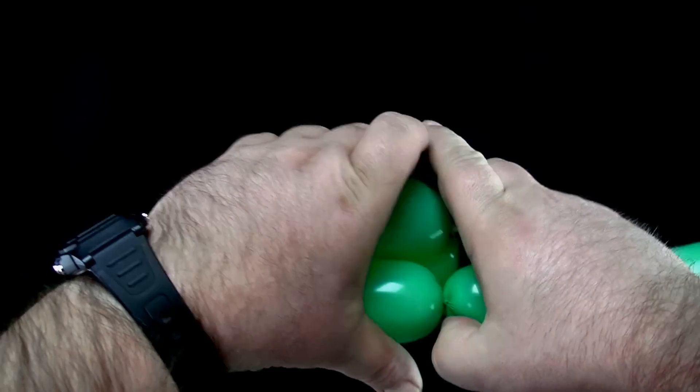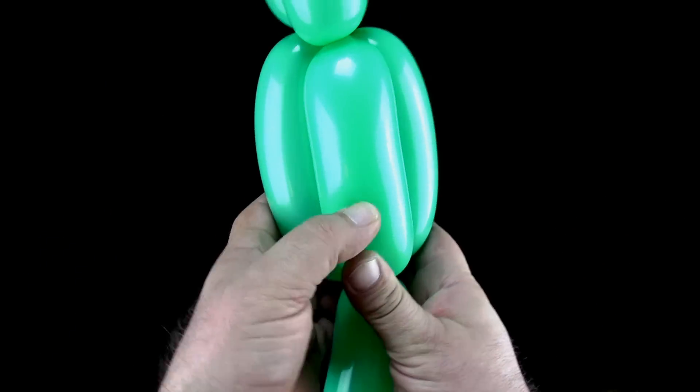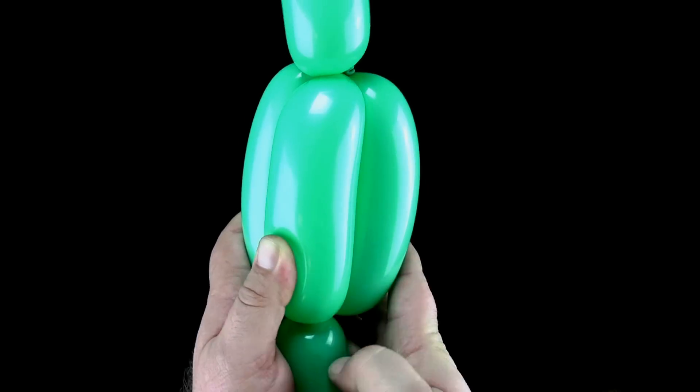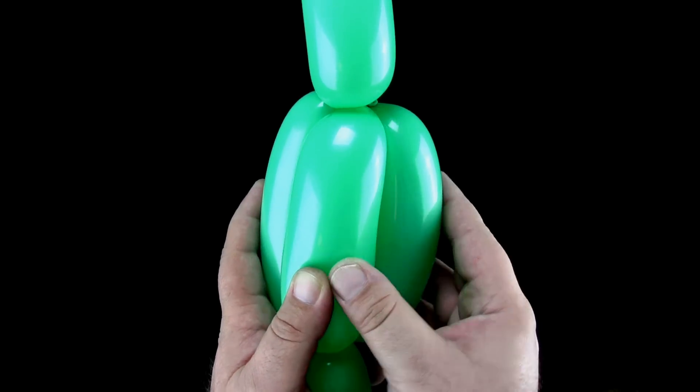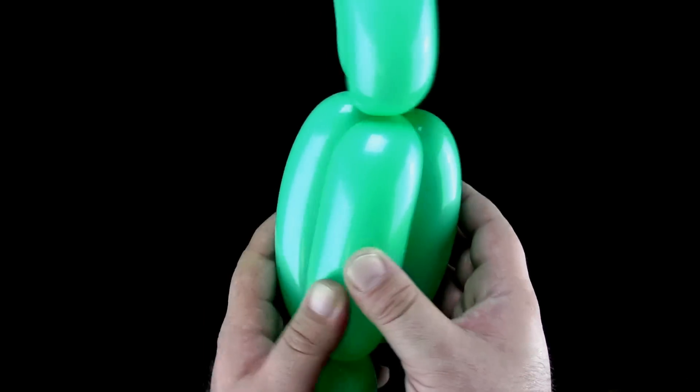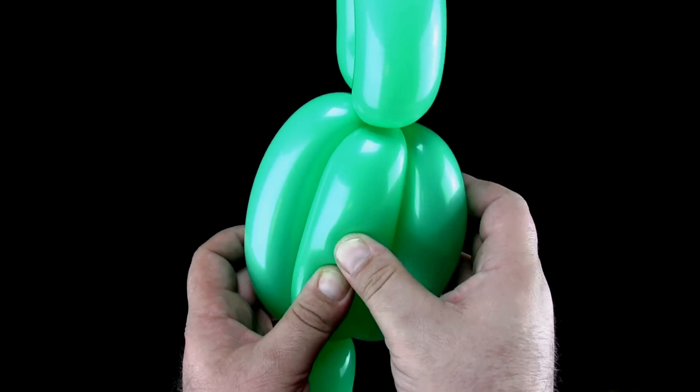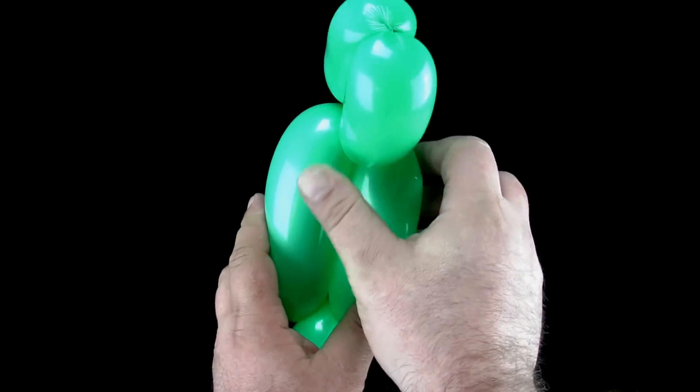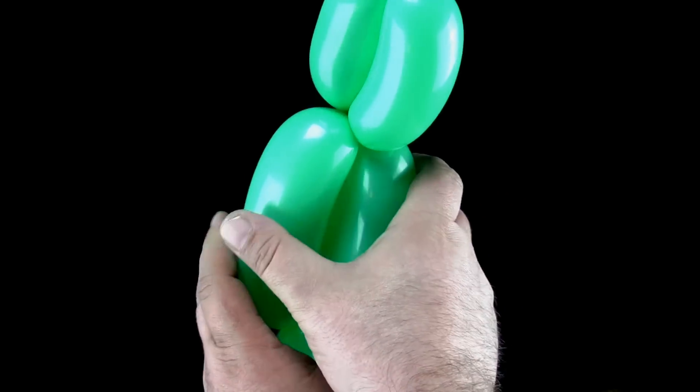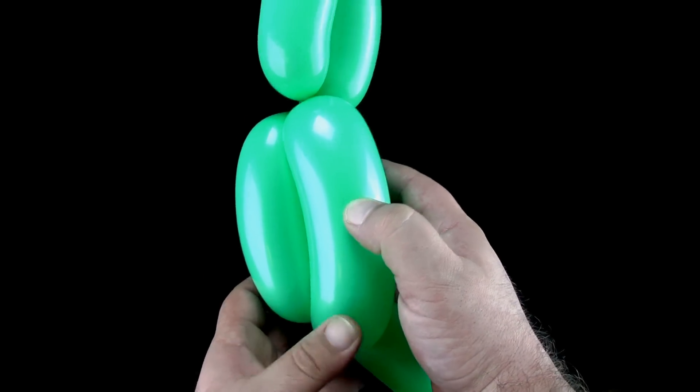Now perform a three bubble roll through. This involves pushing the bubble you just twisted in between the lock twisted bubbles and through to the other side. Push the bubble through the center while rolling the lock twisted bubbles around the outside to the front. This will be the bird's body.